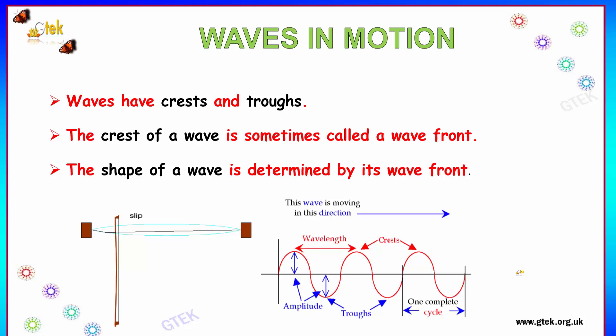Let's discuss waves in motion. Waves have crests and troughs. The crest of a wave is sometimes called a wave front, and the shape of the wave is determined by its wave front.